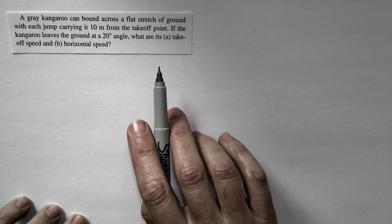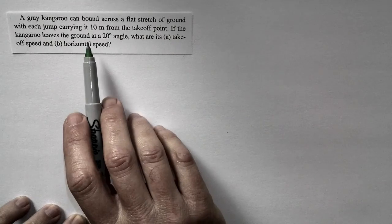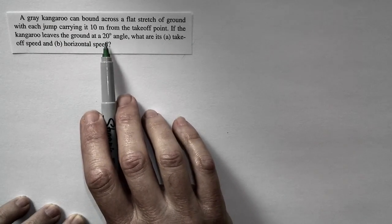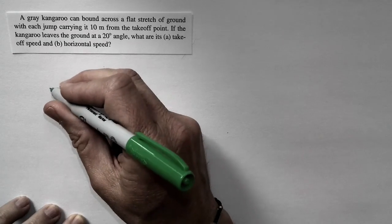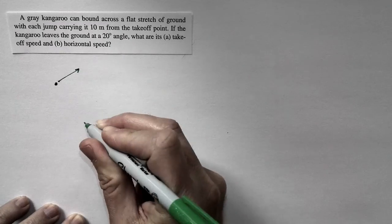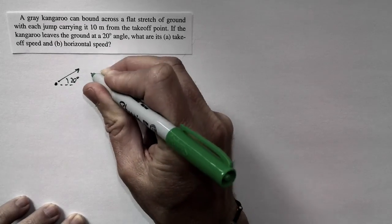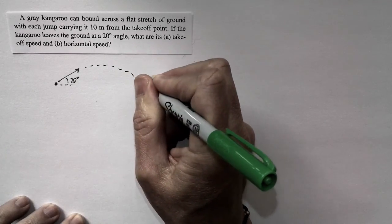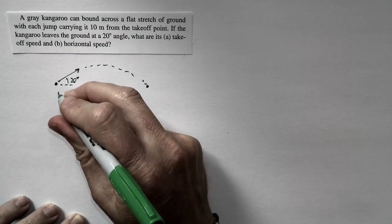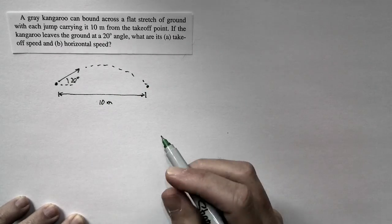This is a question about kangaroo locomotion. The kangaroo is bounding across a flat stretch of ground, and each jump carries it 10 meters. We're told that the kangaroo takes off at a 20 degree angle. The bounding motion looks like this: the kangaroo leaves the ground at a certain speed at a 20 degree angle, flies through the air, and completes its motion at the same height because it's a flat stretch of ground. Over this trajectory, it flies a distance of 10 meters through the air.